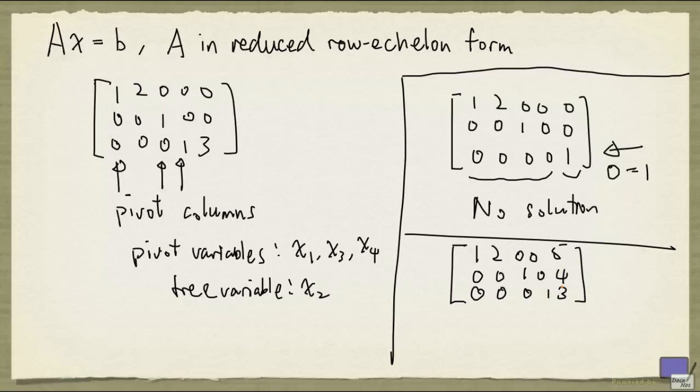Now, how do you get a solution out of this? The easiest way is to set the pivot variables to the right-hand side values. So the pivot variable in the first row is x1, and we set x1 to 5. In the second row, the pivot variable is x3, and we set it to 4. And in the third row, the pivot variable is x4, we set it to 3.